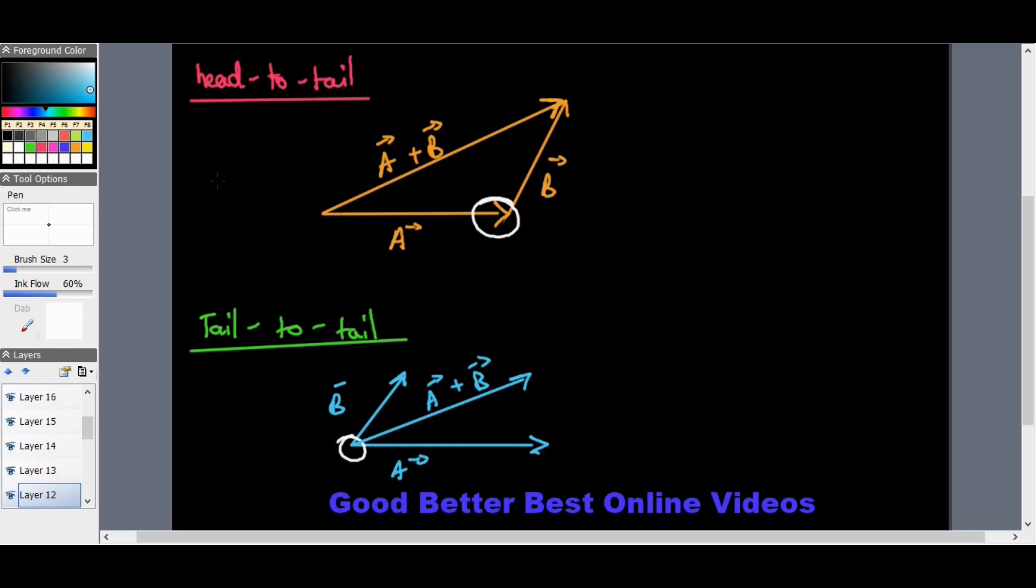Then the resultant would be this line. See, the lines match, just drawn differently. That's the tail-to-tail method. Choose one to learn better than the other. I always liked head-to-tail because it's simpler and makes the most sense. Be uniquely you.